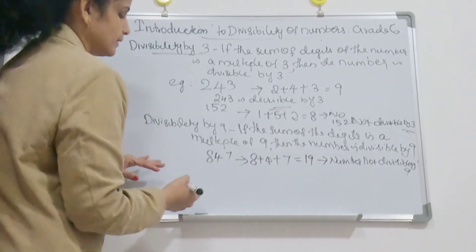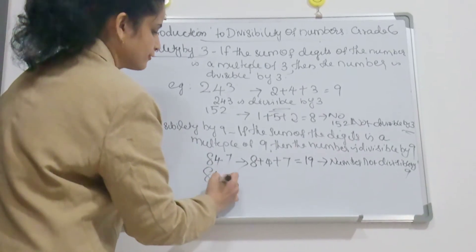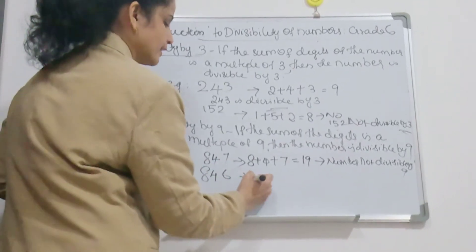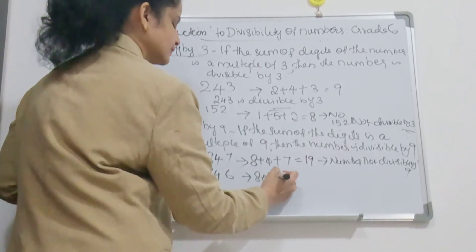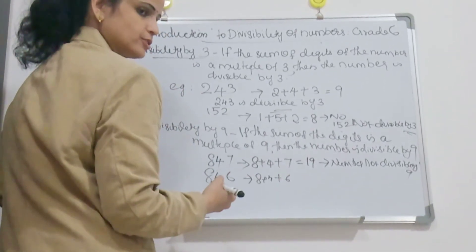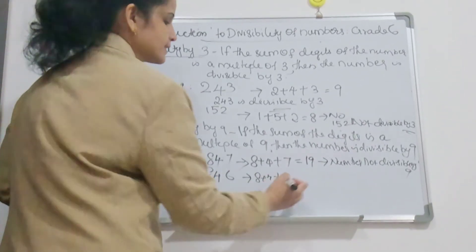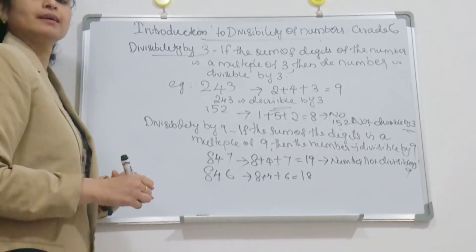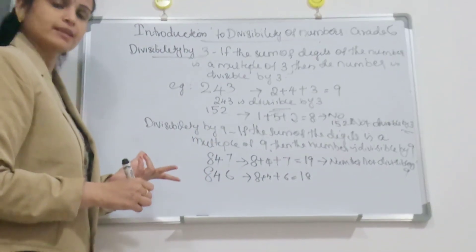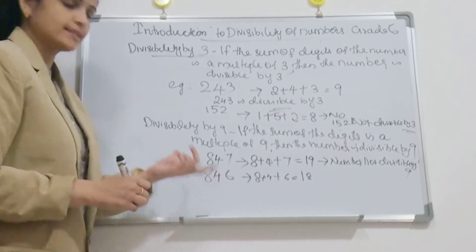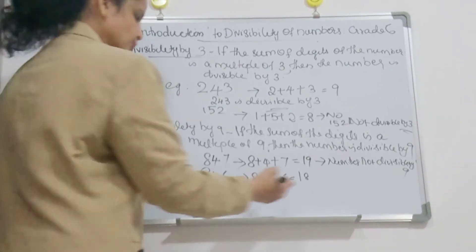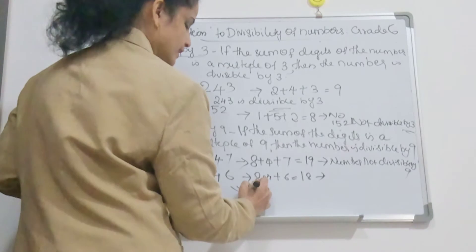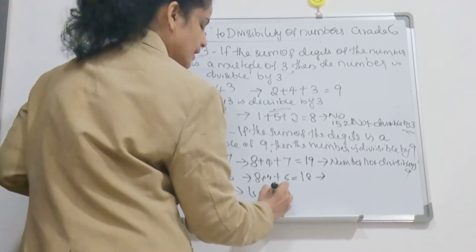Another example: 846. You add 8 plus 4 plus 6. 8 plus 4 is 12, 12 plus 6 is 18. Is 18 a multiple of 9? Yes — 9 times 2 is 18. So 18 is a multiple of 9, and therefore the whole number 846 is divisible by 9.